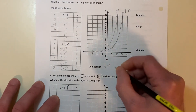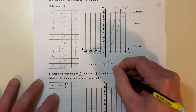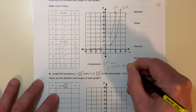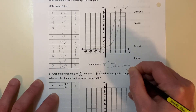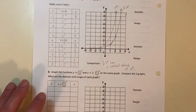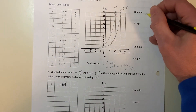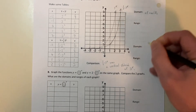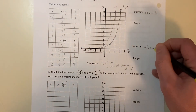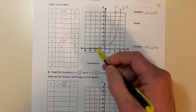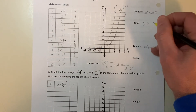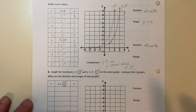So one-third times three to the x was a vertical shrink of three to the x. That's what changing the number out front does. If you made it three out front, that would be a vertical stretch — it would multiply things out by a factor of three. Notice our domain on both of these is all real numbers, and our range is y is greater than zero — it gets right up next to zero but won't become zero.